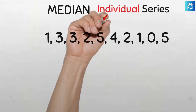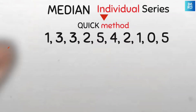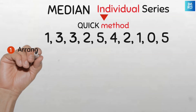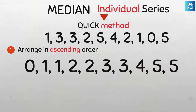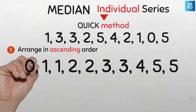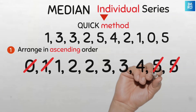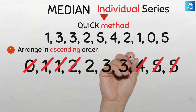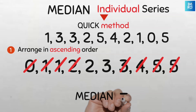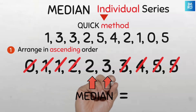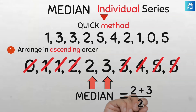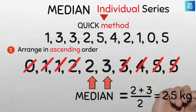We can also quickly do this using the quick method if the data is not too large. Since the median is the middle number, half of the data values lie below and the other half above the median. Arrange the data in ascending order, then cancel from each end. After canceling the first and last, then the second and second-to-last, and so on, we're left with two numbers. Find the average of 2 and 3 and get the median: 2.5. Easy peasy.